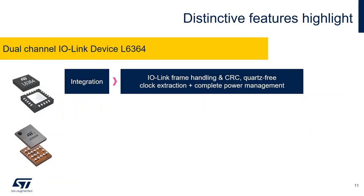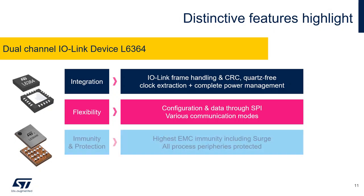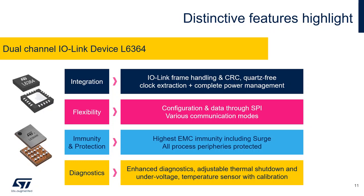Let's summarize the key distinctive features of the chip. We have advantage in integration as we embed the IO-Link frame handler with checksum calculation and verification, automatic clock extraction and all power management circuits. L6364 offers high flexibility — many parameters are accessible for configuration through SPI and the data transfer is also done through the same interface. We can select among several communication modes. We have a clear advantage at immunity and protection performances; all the process peripheries are protected against EMC disturbances including surge pulses achieving the highest immunity levels. Thanks to enhanced diagnostics we have a clear overview about what's happening around the application, including adjustable thermal shutdown and undervoltage levels and an integrated 7-bit temperature sensor with possibility of calibration.